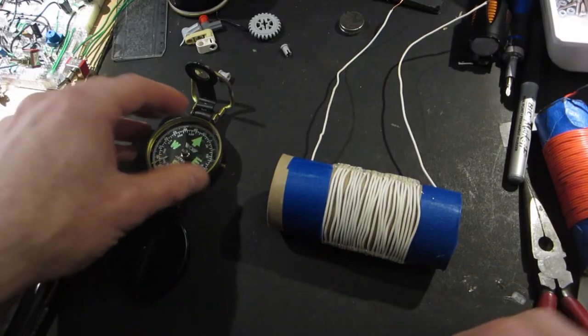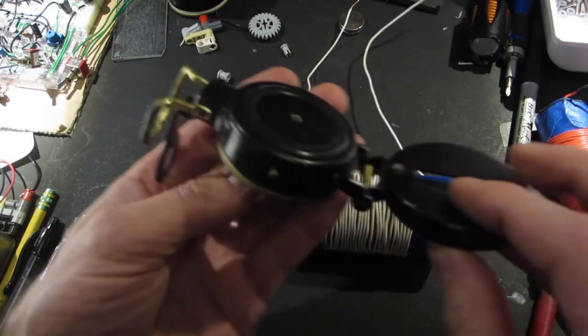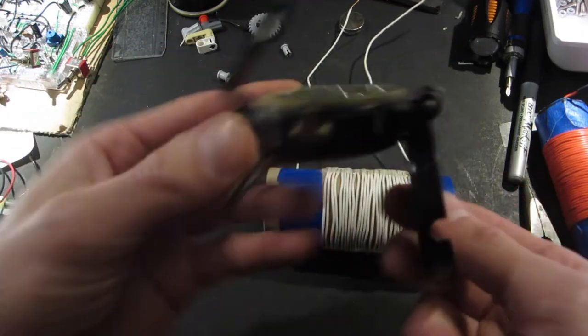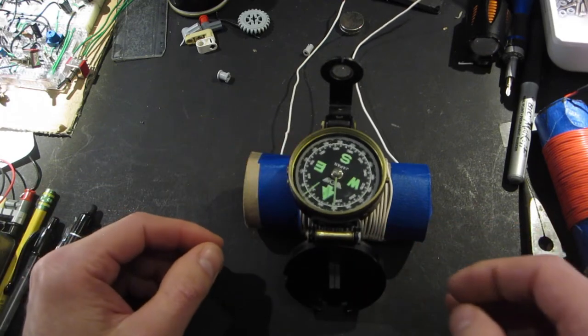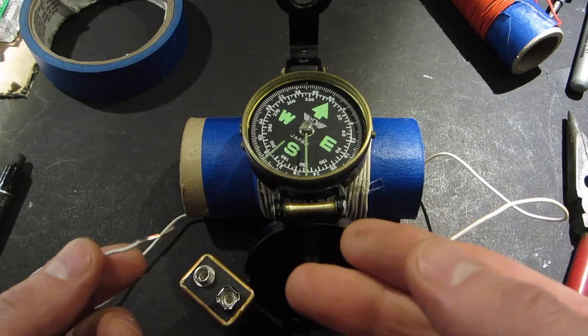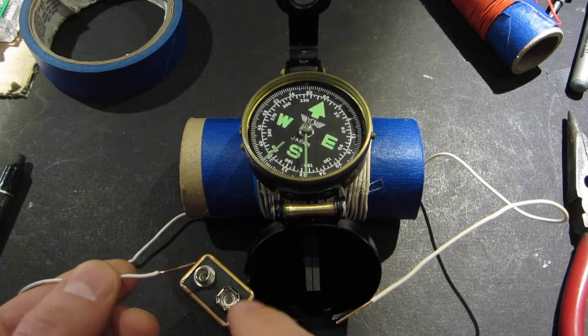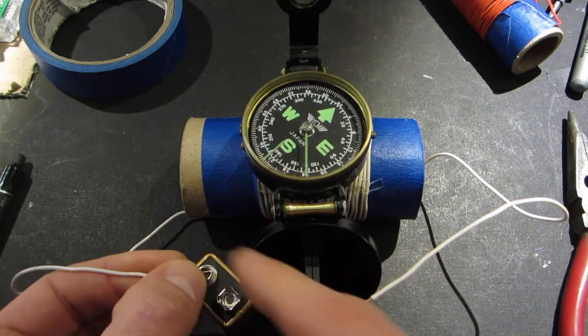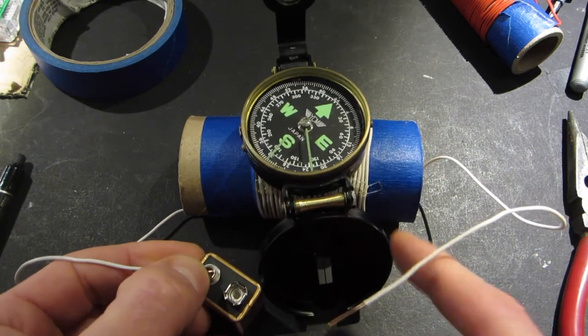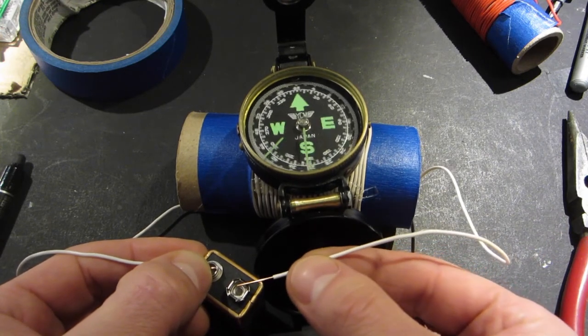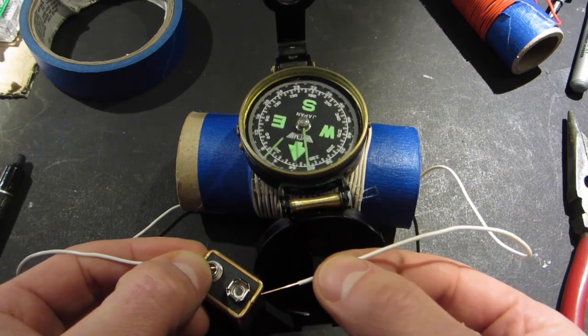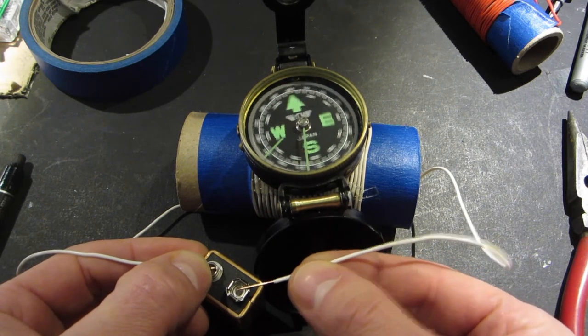Alright, we're ready to begin the experiment. If you happen to have a compass with one of these viewfinder things on it, that might work better. Because then you can sit it up here on top of the windings. Hopefully it's pretty clear what to do here. We're going to take one wire and touch it to one of the terminals on the battery. And the other wire. Briefly hold it down. And then remove it. Briefly hold it down and remove it.